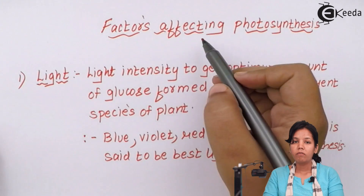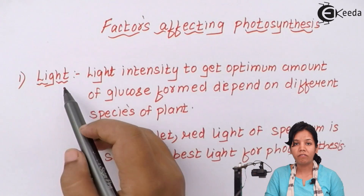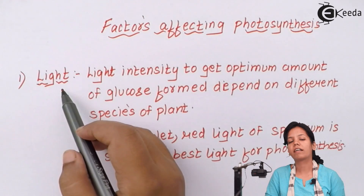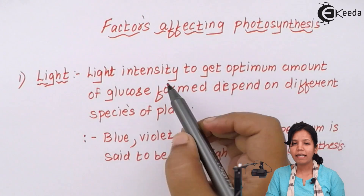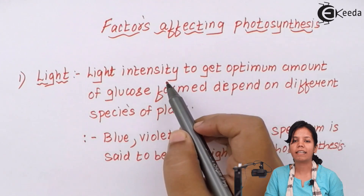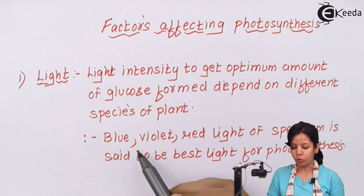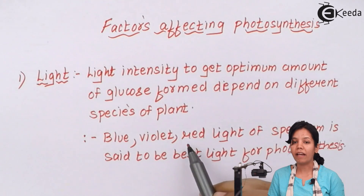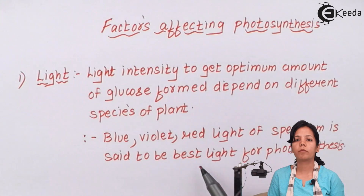Factors affecting photosynthesis: the first factor affecting photosynthesis is light. If the intensity of light increases it can hamper the process of photosynthesis. The blue, violet, and red spectrum of light is said to be best for the process of photosynthesis.